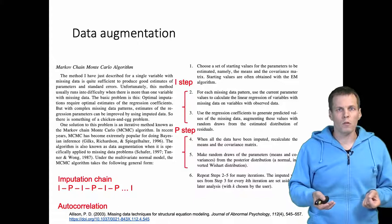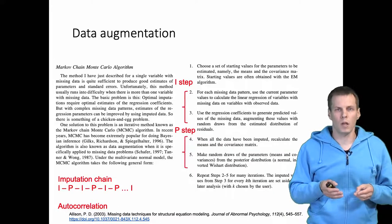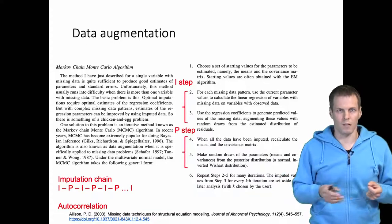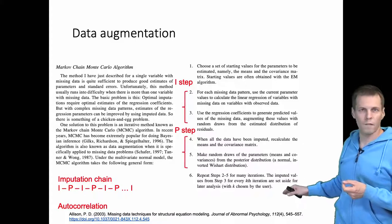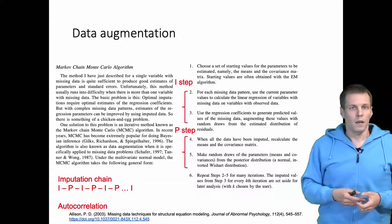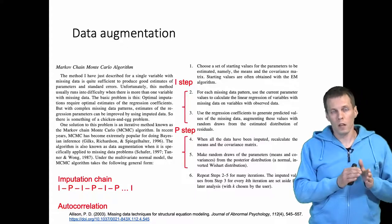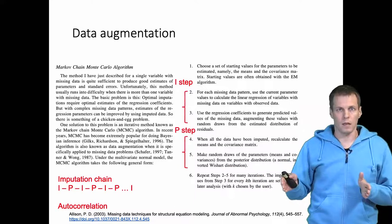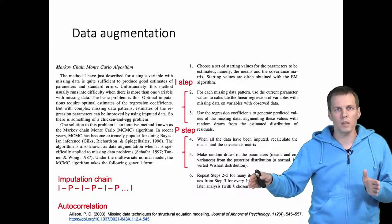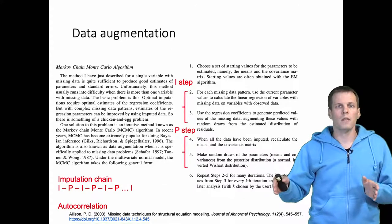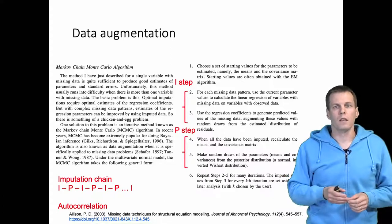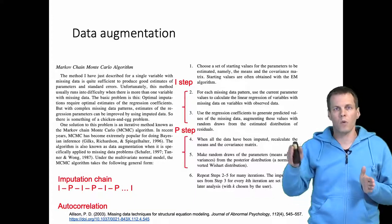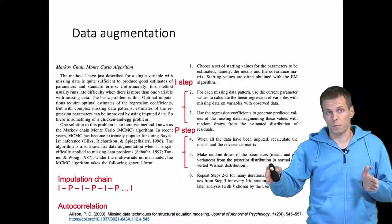To deal with the autocorrelation, we allow the imputation algorithm to run many iterations before we take another dataset. For example, we might have a chain of 1000 imputed datasets and store only every 100th. Because there are 99 datasets between those we actually use, we can be pretty sure that any autocorrelation has dampened out, so that dataset number one and dataset number 101 would be independent.